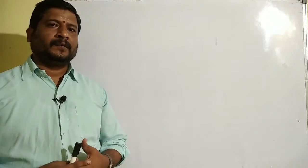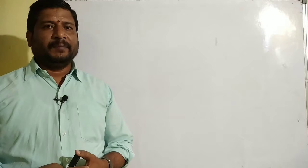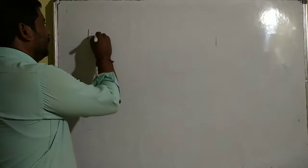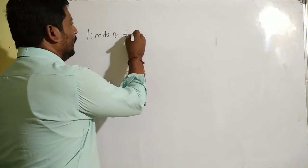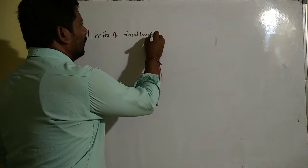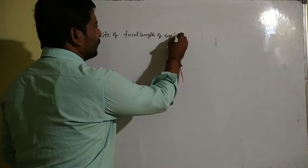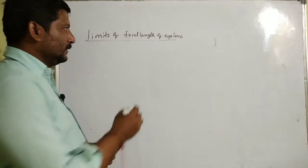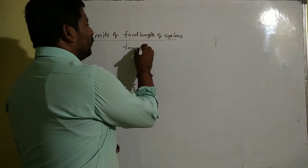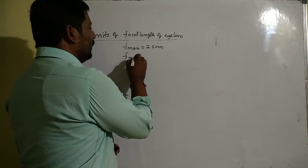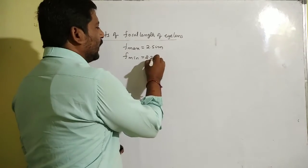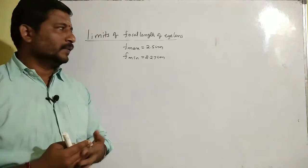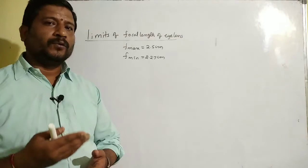Hello children, let us find the limits of focal length of the eye lens. The maximum focal length of the eye lens is 2.5 cm. The minimum focal length is 2.27 cm. Let us find out these values taking two different cases.